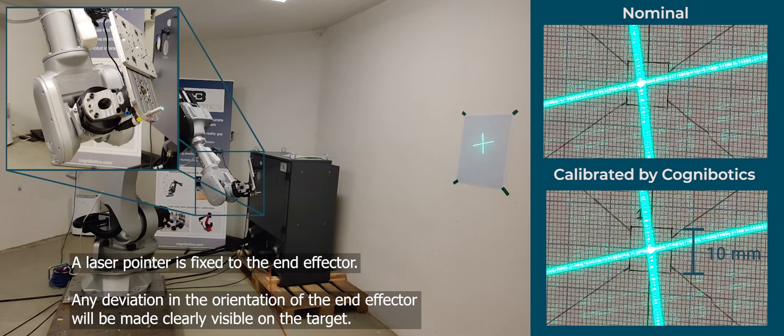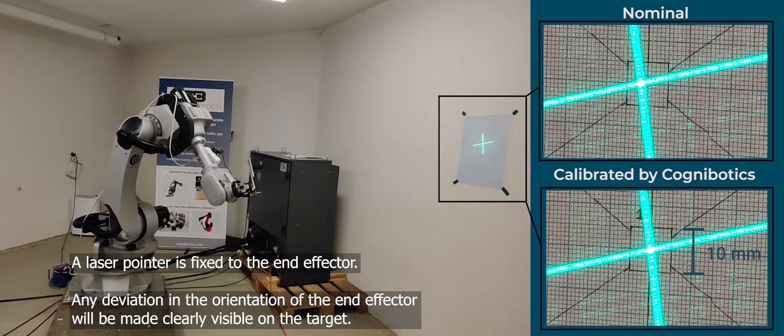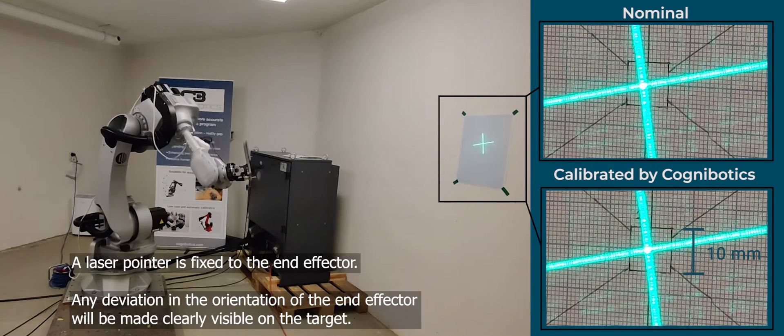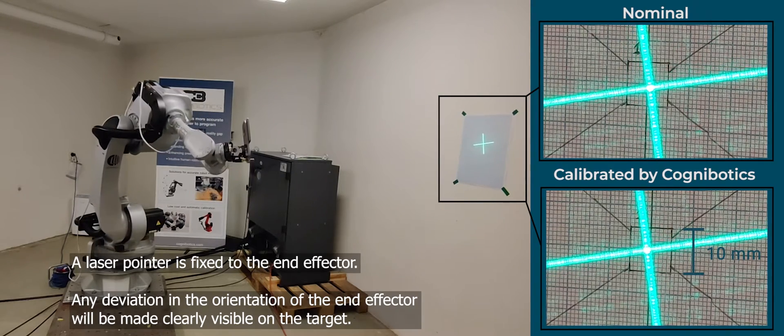A laser pointer is fixed to the end effector. Any deviation in the orientation of the end effector will be made clearly visible on the target.